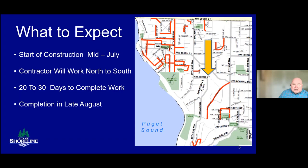For example, after the BST is placed and rolled in on your street, the contractor will move on to other streets, and then return to your street in about four days to a week to apply the final fog seal layer. We like to give the asphalt emulsion and the rock time to settle in and embed, and we're trying to generate just a single layer of rock chip across the street.